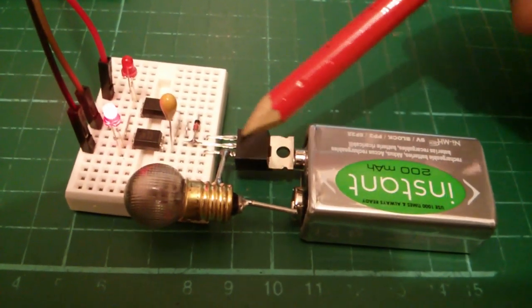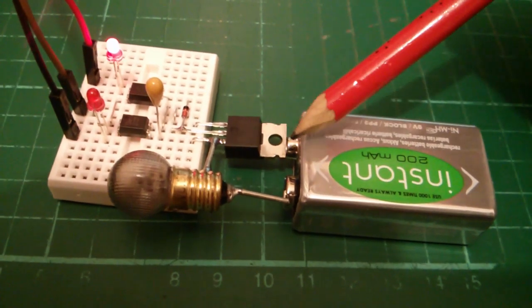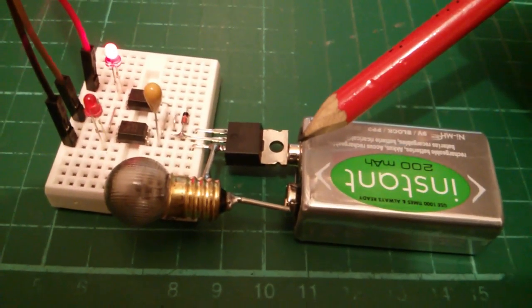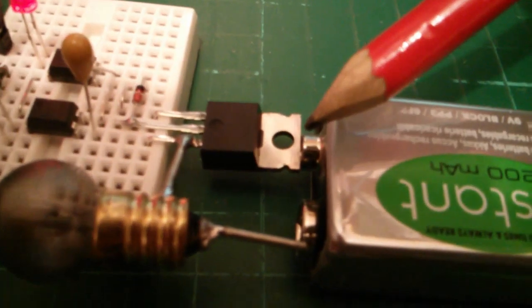Now the MOSFET is in the high side, on the positive side of the battery, and it's an N-channel MOSFET.